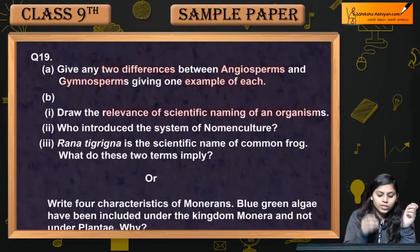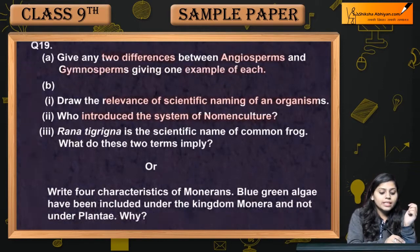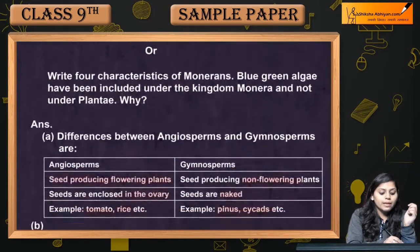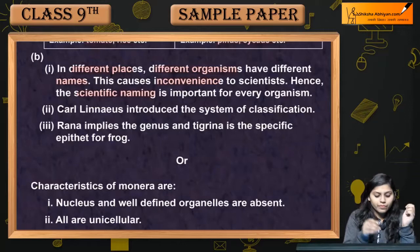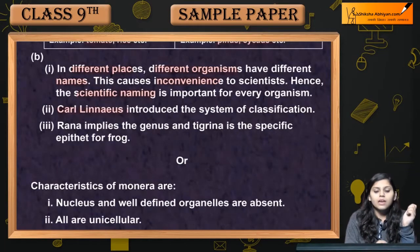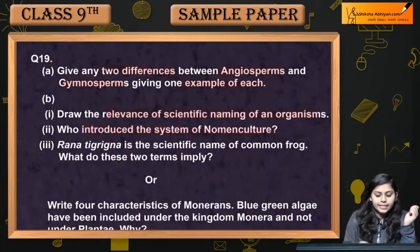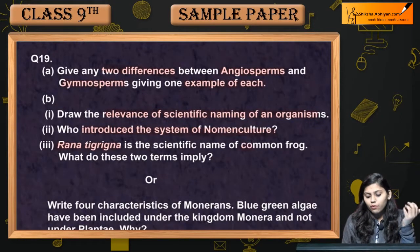Next question: who introduced the system of nomenclature? The binomial nomenclature was introduced by Carolinus (Carolus Linnaeus). Next: Rana tigrina is the scientific name of the common frog.